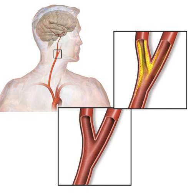Transient ischemic attacks are a warning sign and may be followed by severe permanent strokes, particularly within the first two days. TIAs by definition last less than 24 hours and frequently take the form of a weakness or loss of sensation of a limb or the trunk on one side of the body, or the loss of sight in one eye. Less common symptoms are artery sounds or ringing in the ears.